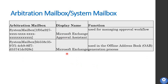The next arbitration mailbox is Microsoft Exchange, which is used in the offline address book generation process. This type of mailbox is also known as your organization mailbox, and it is responsible for generating your address list in your organization.